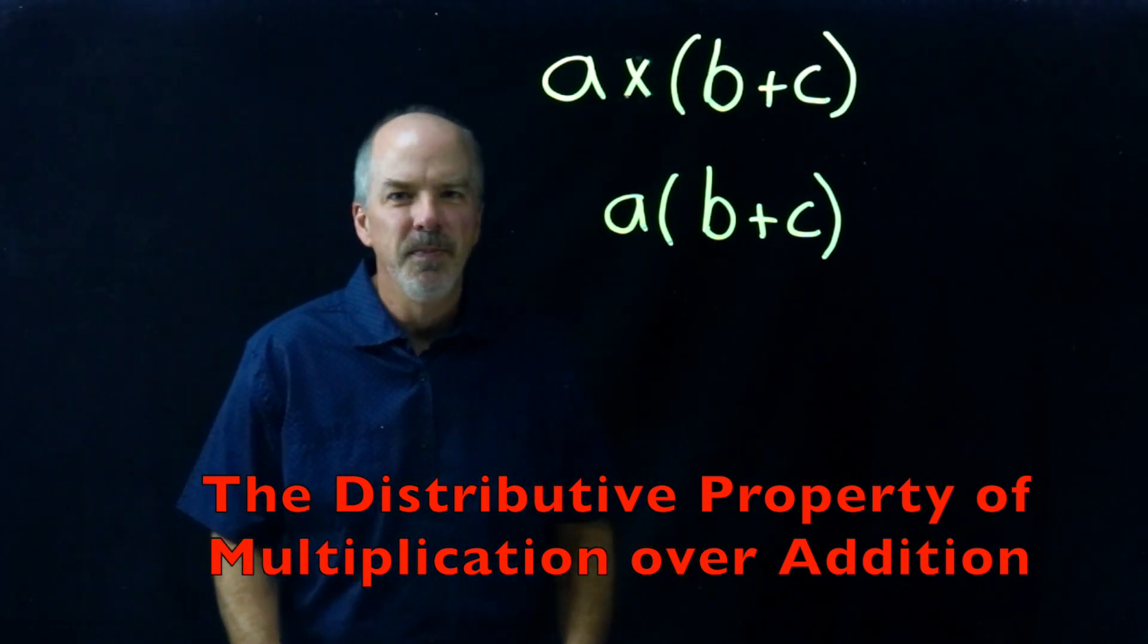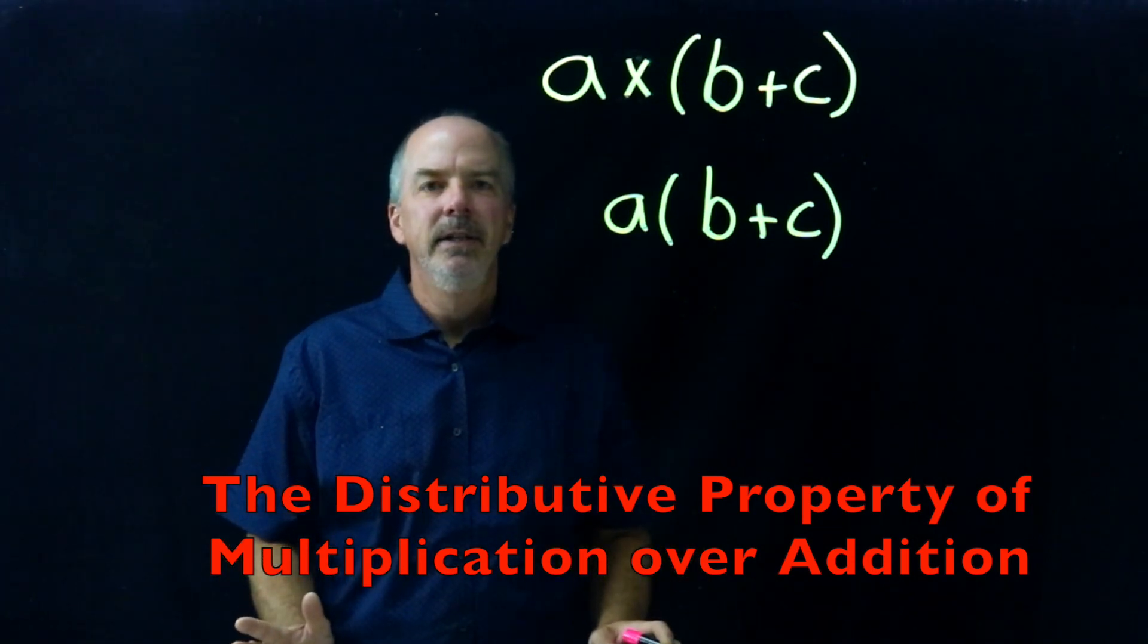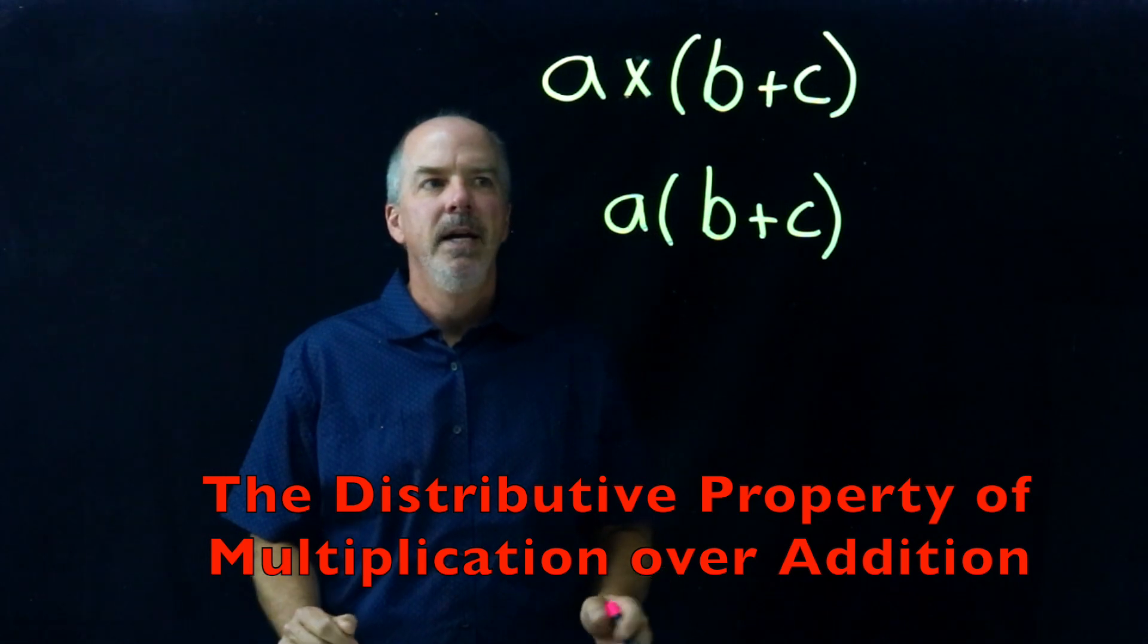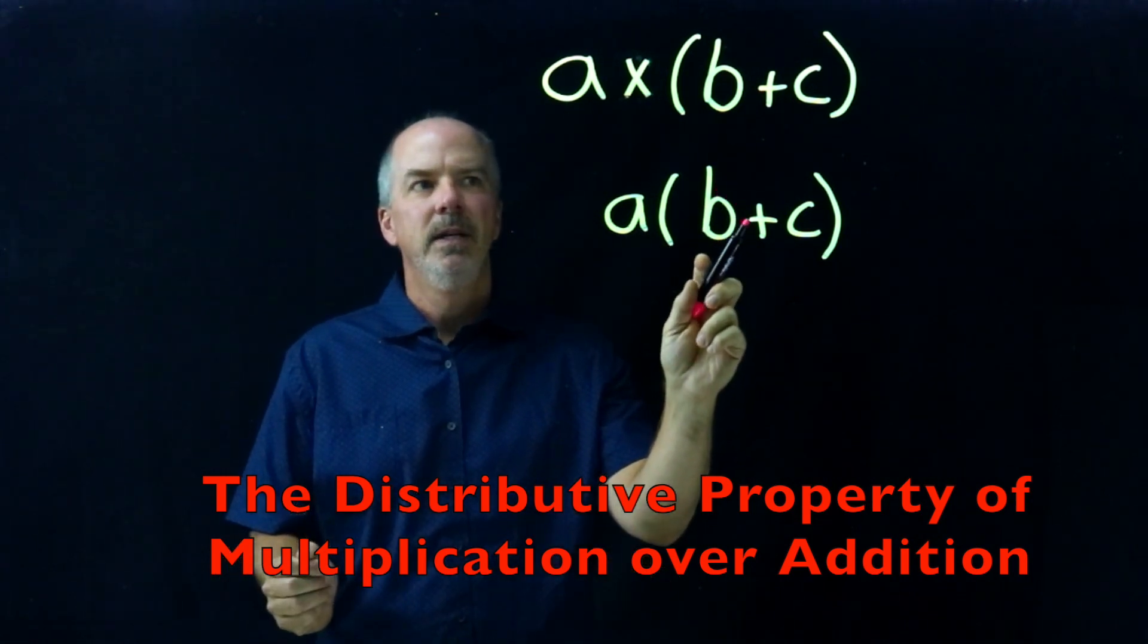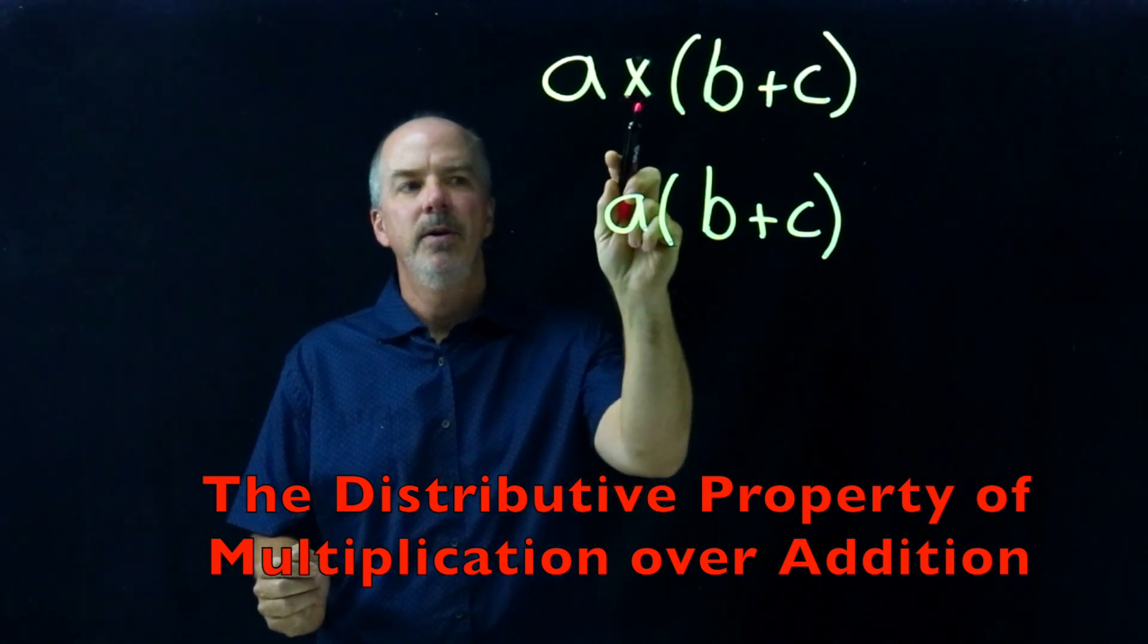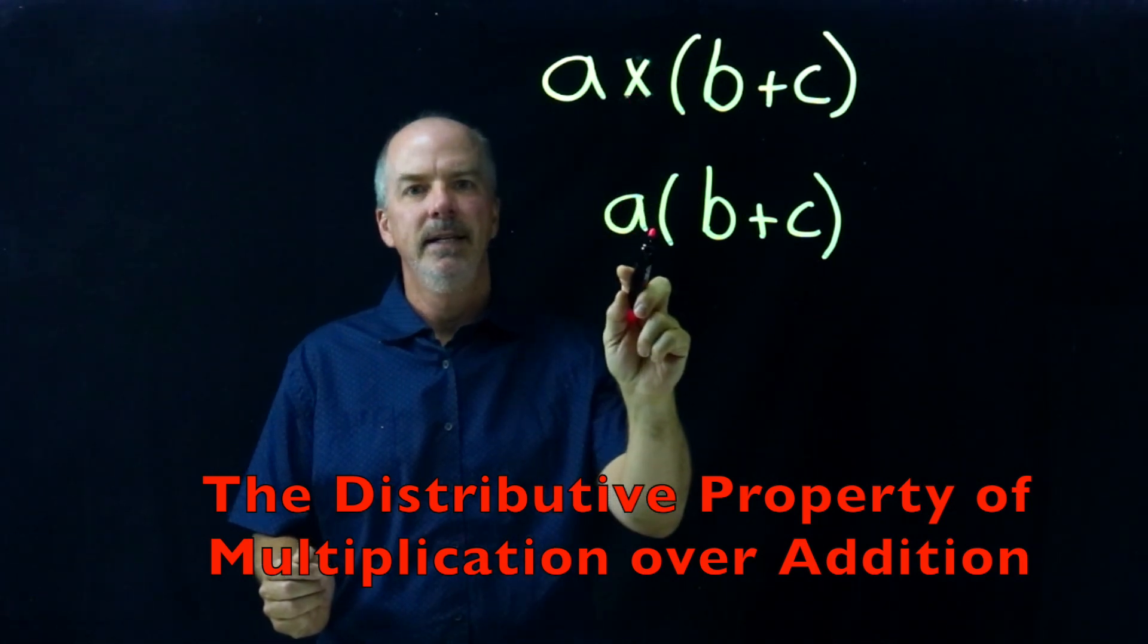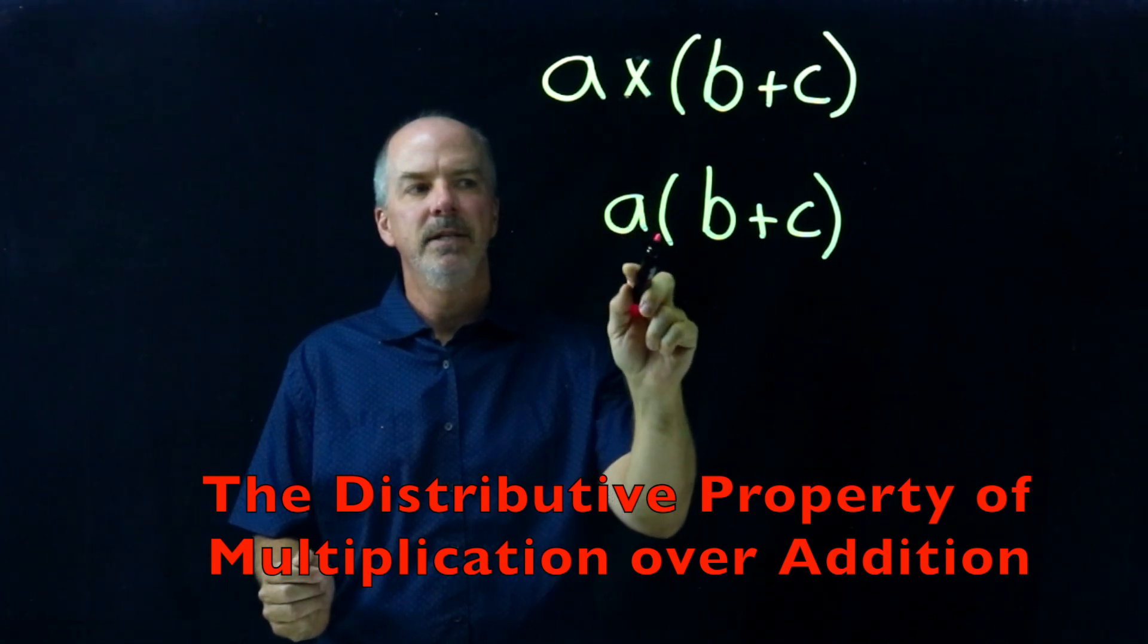The Distributive Property allows us to multiply a factor by a sum. You can see it written two ways at this fifth grade level. You can see it written with the multiplication x, or you can see it written with no sign. No sign means to multiply.